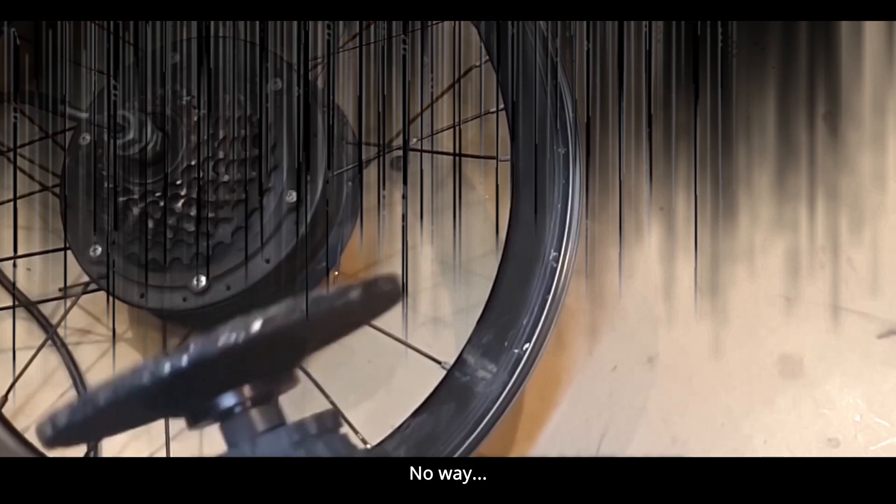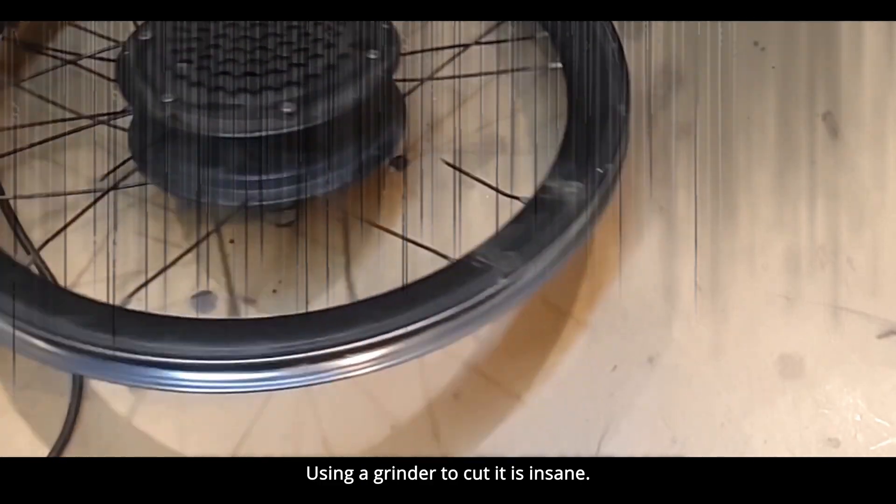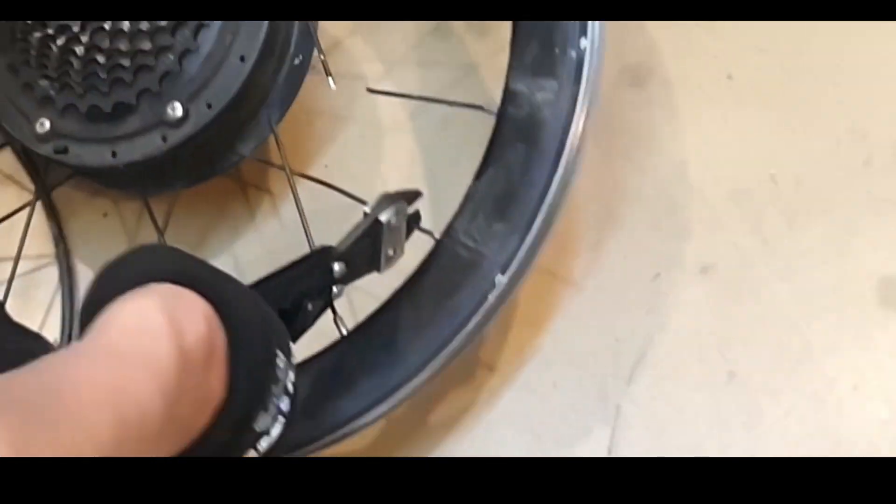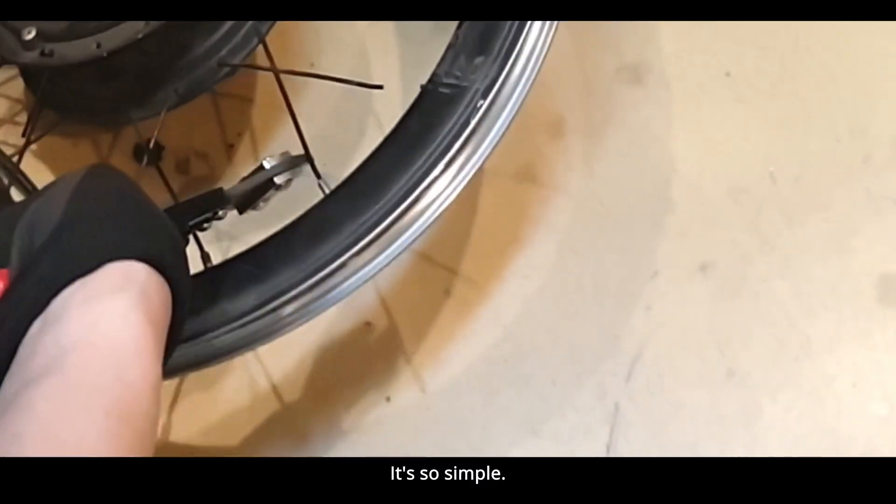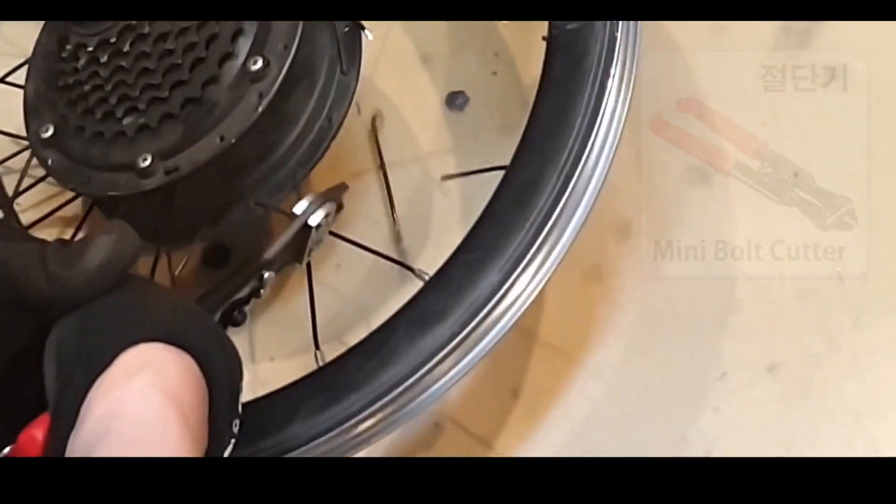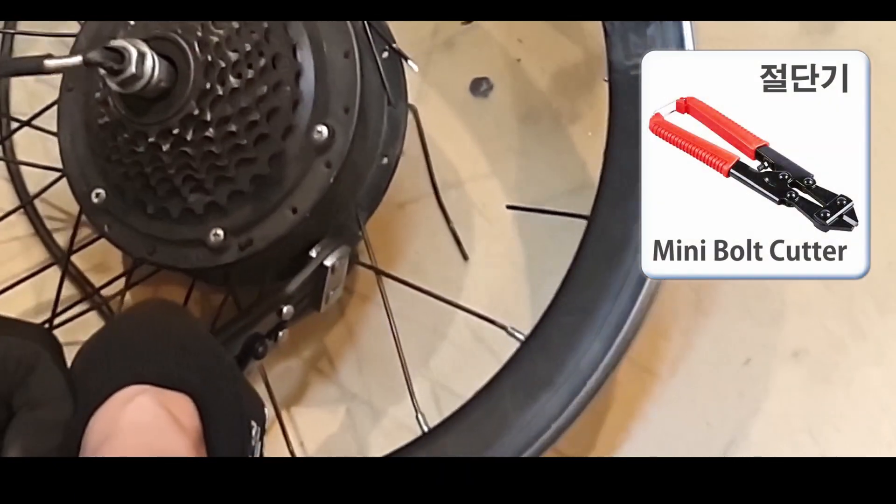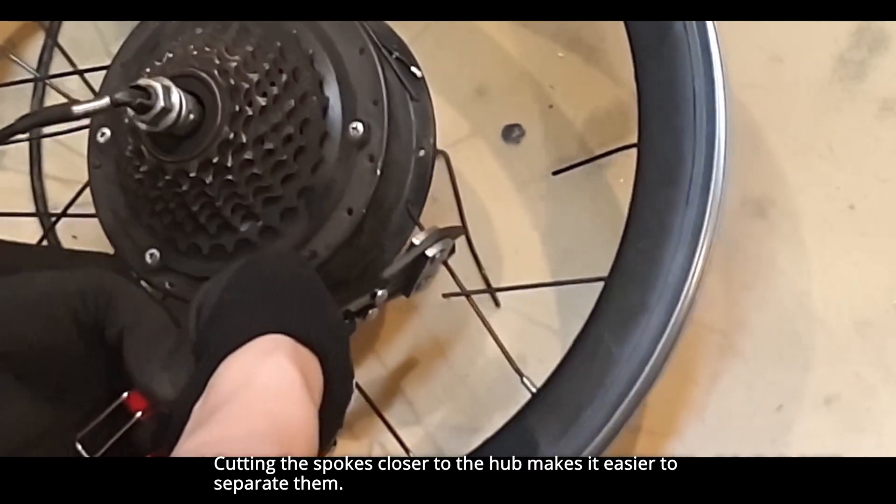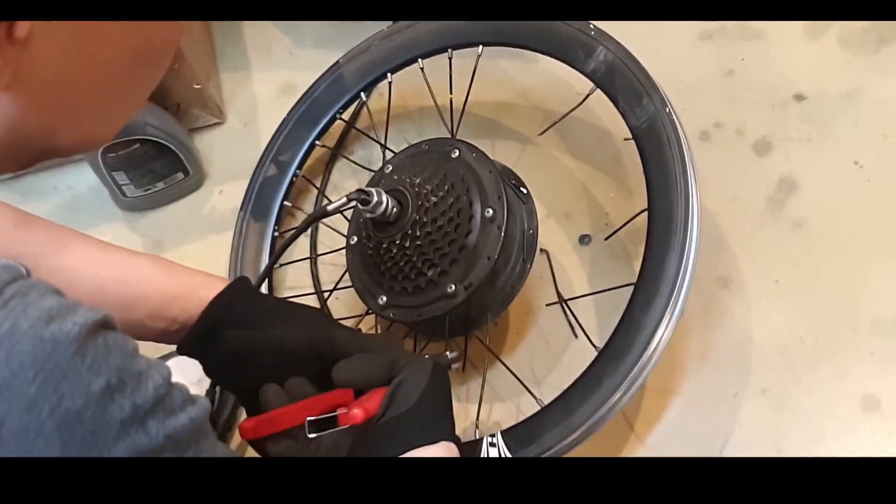Using a grinder to cut it is insane. I found the missing tool. It's so simple. Cutting the spokes closer to the hub makes it easier to separate them.